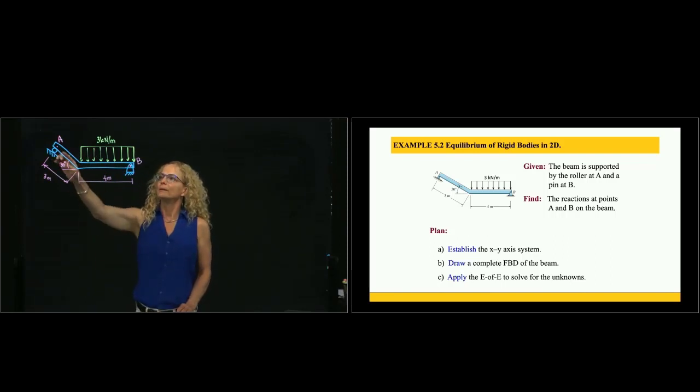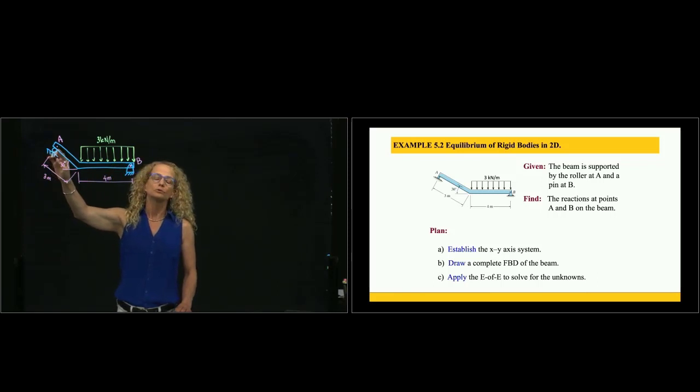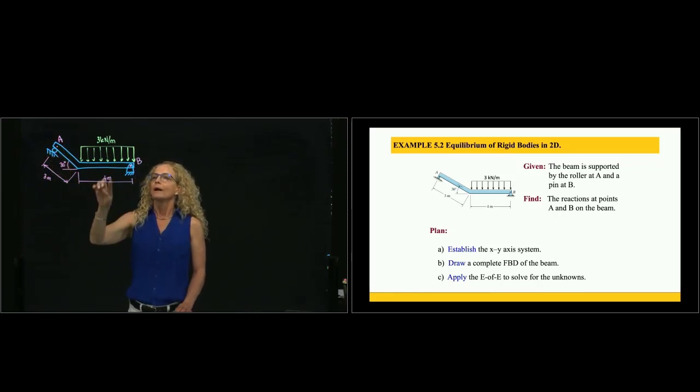So we have a beam, and we don't know anything about the weight of the beam, therefore it's neglected compared to the force applied to the beam. We have a pin at B, and a simple support at A. A pin restricts two degrees of freedom - it restricts motion in X and in Y.